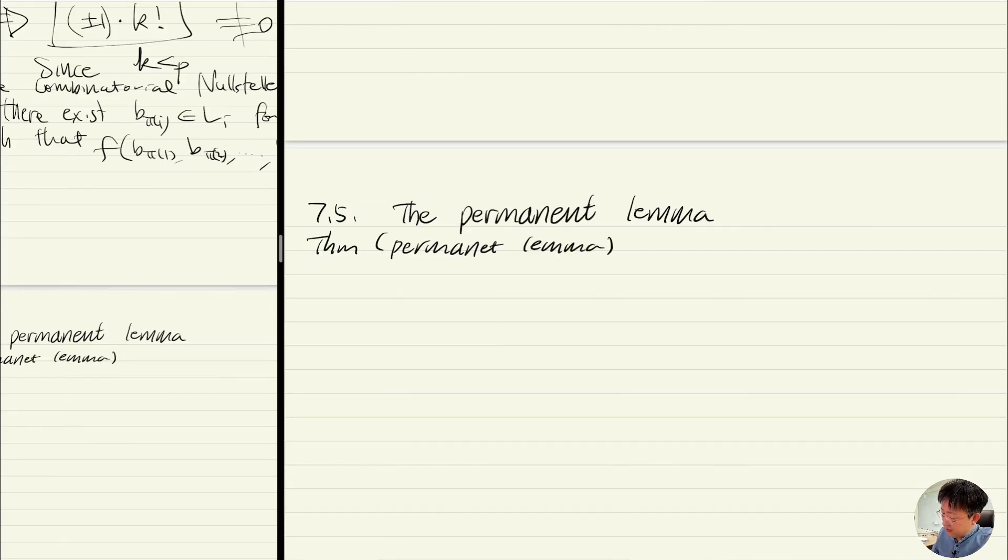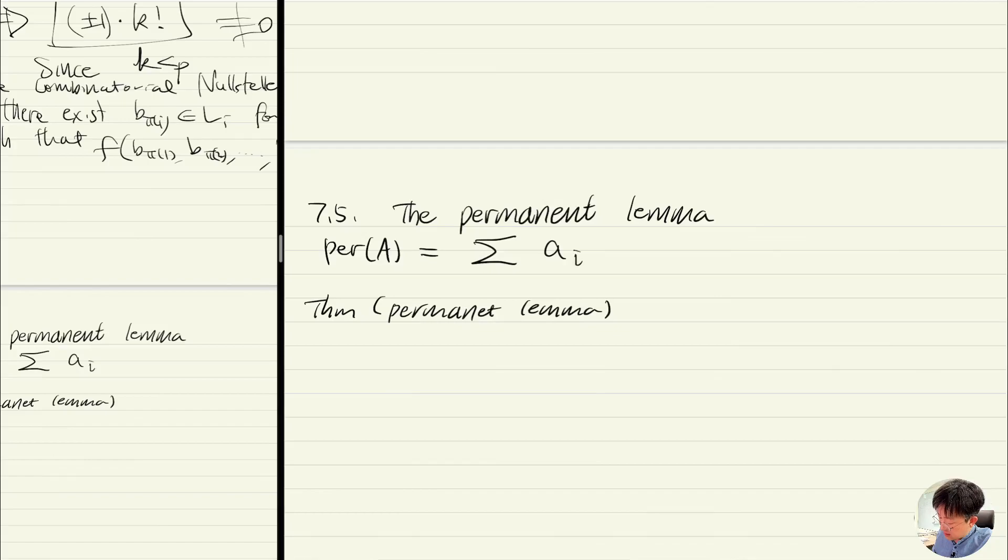Before stating the lemma, I'm going to tell you the definition of permanent. The permanent of a square matrix is simply the sum of all these things for all permutations. Sum of the product of a_i pi(i).